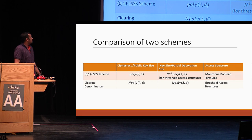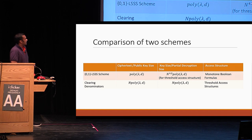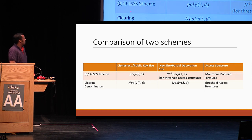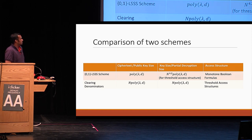Here is a short comparison of the two schemes. For the first scheme based on 01-LSS, the ciphertext size is poly(lambda, D) where lambda is the security parameter and D is the depth. The size of the key and partial decryption is N^4.2 times poly(lambda, D), where N is the number of parties. However, this scheme supports broader access structures beyond threshold. For the second scheme using clearing denominators, the ciphertext and public key size is N times poly(lambda, D), and the key and partial decryption size is also N times poly(lambda, D). However, this works only for threshold access structures.